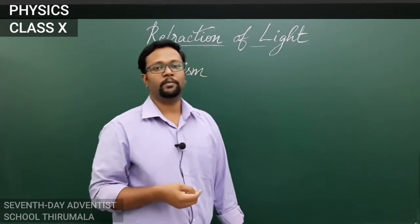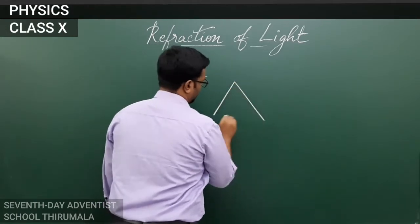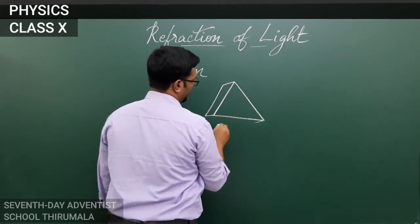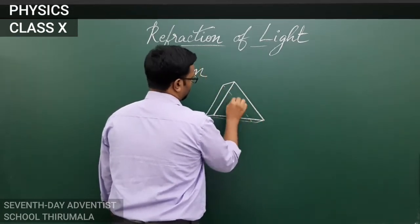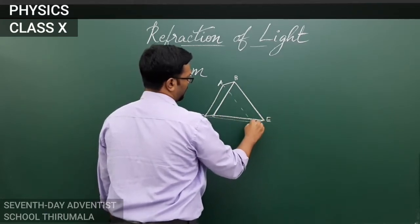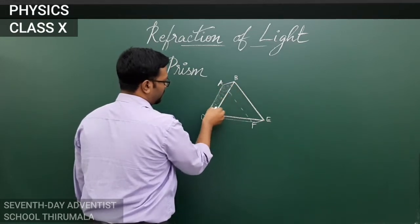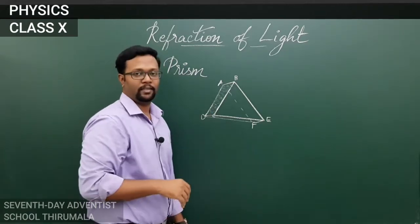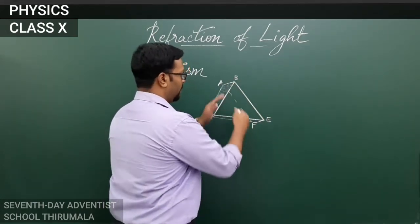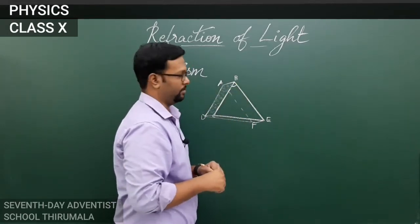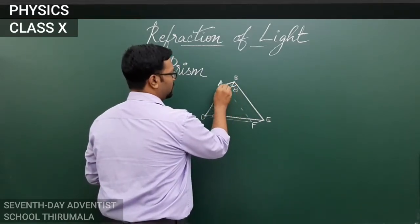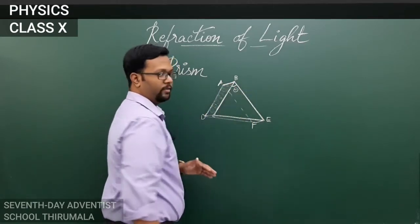Now we will look in detail at how a prism works. Let this be a prism drawn in three dimensions with vertices A, B, C, D, E, and F. The plane surface ABCD is one refracting surface and the plane surface ABEF is another refracting surface. They are both at an angle to each other.